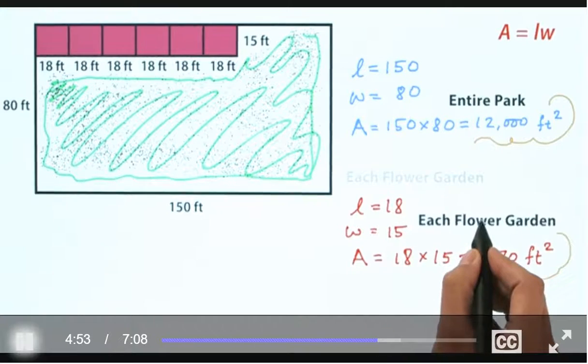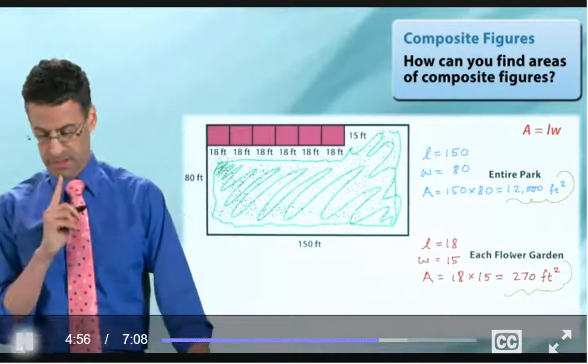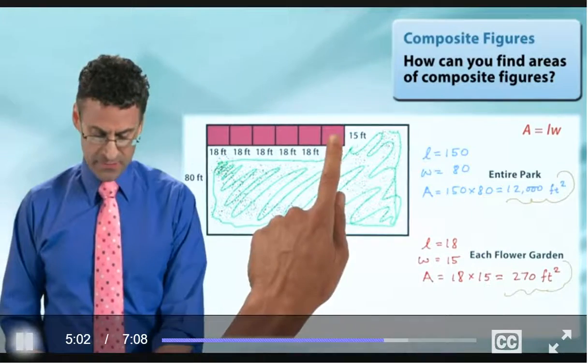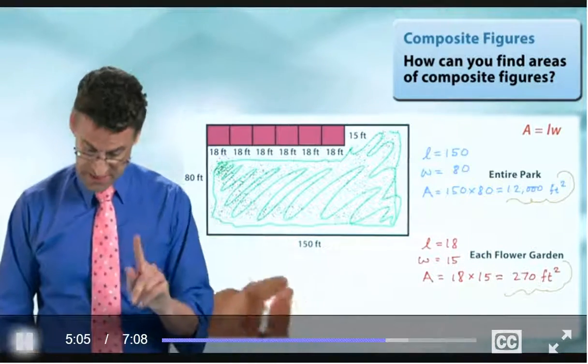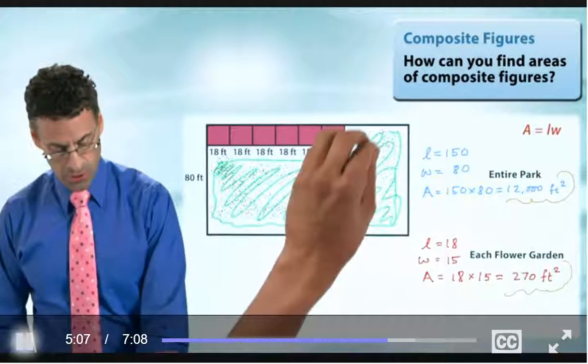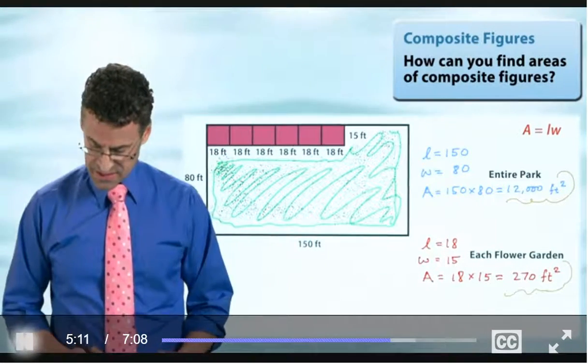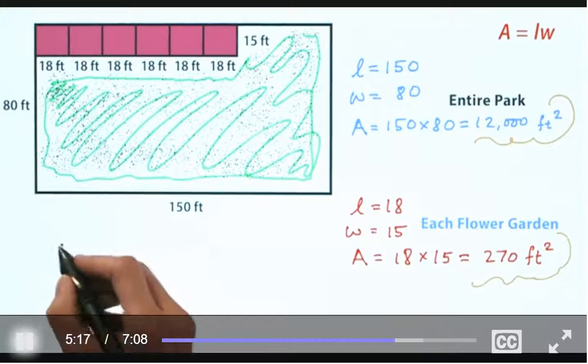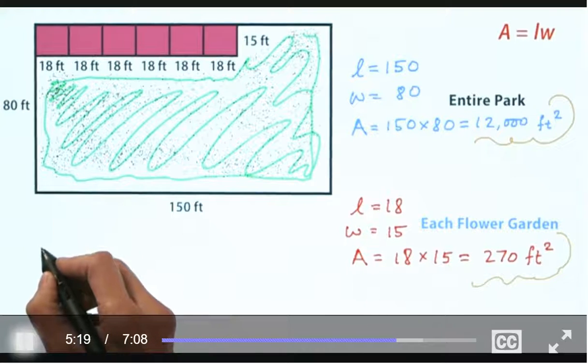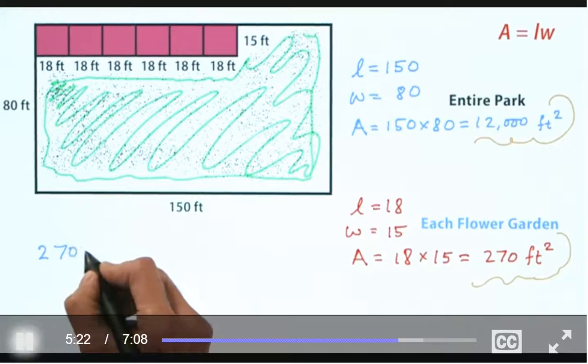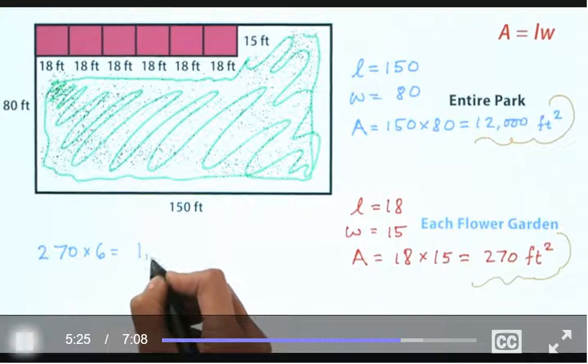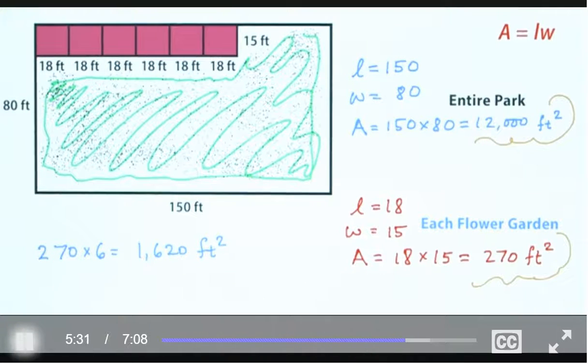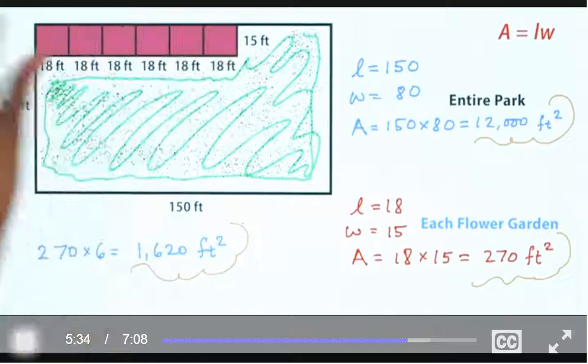Well, that is great. But we're not done, because that's just the area for each flower garden. How many do we have? One, two, three, four, five, six. Six. So to find the area of this whole shape, we need to multiply this answer by six. And so if we do that, what we see is 270 times six, which equals 1,620. And that's feet squared. And that actually represents the area of all the flower gardens together.